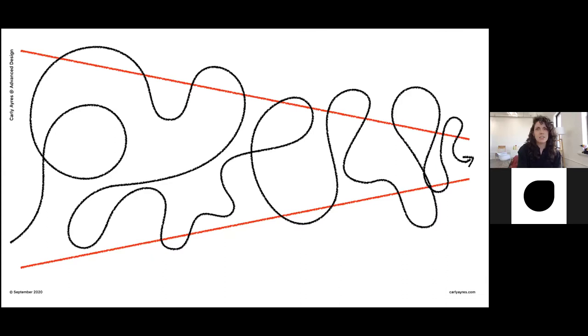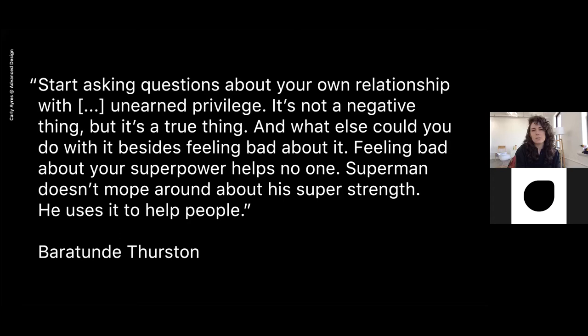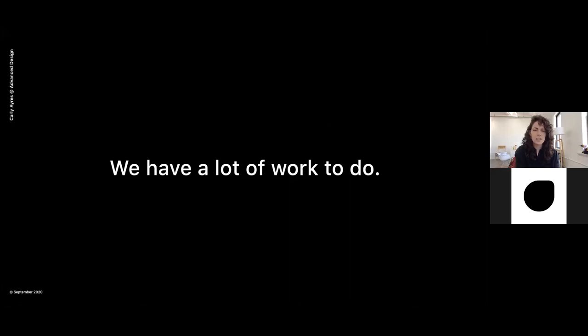All that zigging and zagging can feel a bit uncomfortable, but that's all just part of growth — part of these growing pains. One quote that struck me recently: 'Start asking questions about your own relationship with unearned privilege. It's not a negative thing, but it's a true thing — and what else could you be doing with it besides feeling bad? Feeling bad about your superpowers helps no one. Superman doesn't mope around about his super strength, he uses it to help people.' — Baratunde Thurston, comedian and author. There is a lot of work to be done, and for me that's mostly led to taking a critical look at my own work spaces and examining how my unchecked biases and racism have played a role in shaping them.